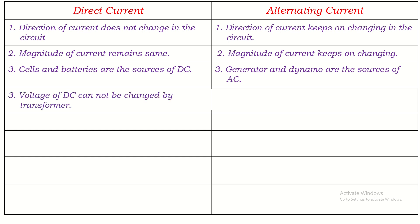Another difference: the voltage of DC cannot be changed by a transformer, but the voltage of AC can be changed by a transformer. A voltage of 11,000 volts is generated in an electric power plant, increased to a very high value, and then transmitted over very long distances. Later, it is stepped down to 33 kilovolts, then 11,000 volts, then 400 volts, and finally when it reaches the household circuit it is dropped down to 220 volts.